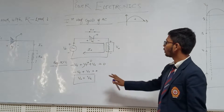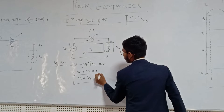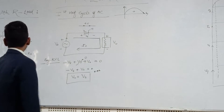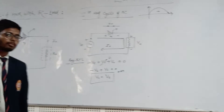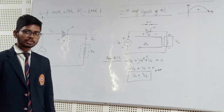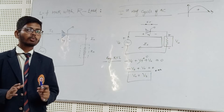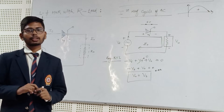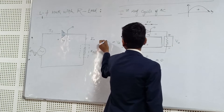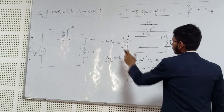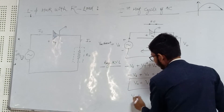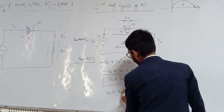From the KVL result, V0 equals Vs. The AC source is represented as Vm·sin(ωt) because we do AC steady-state analysis, not transient analysis. So the result is: V0 equals Vm·sin(ωt).